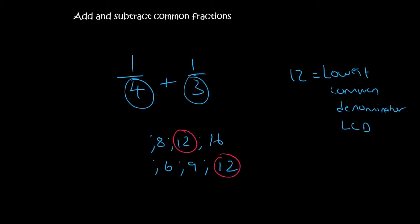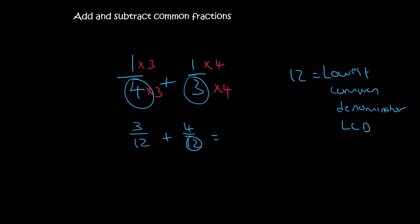So we need to change both of those bottom numbers into a 12. So we're going to have to times this one by 3 and times this one by 4. But what you do to the bottom, you must do to the top. And so this one's going to turn into 3 over 12 and this one's going to turn into 4 over 12. Now that these two are the same, we can just add them and we get 7 over 12. So please remember, when plussing and minussing fractions, you need a common denominator.